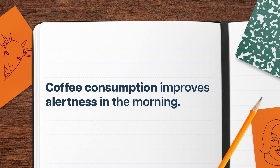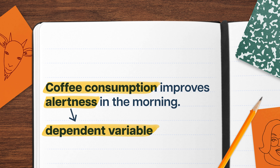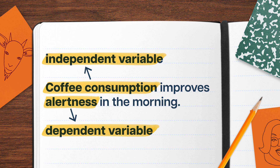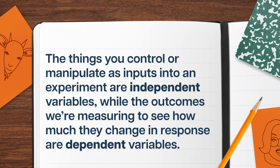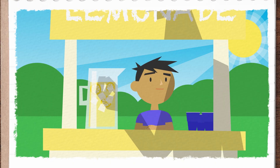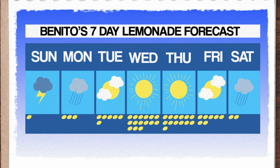This is all clear in cases where we run experiments. Benito, for example, is running a correlational experiment. Going back to our unfairly maligned morning coffee: if we wanted to investigate the statement 'coffee consumption improves alertness in the morning,' alertness is the dependent variable and coffee consumption is the independent variable. That's because we're interested in whether being alert depends on drinking coffee. To test that, you could control whether you drink coffee every morning, independent of other factors — the things you control as inputs are independent variables, while the outcomes you measure in response are dependent variables. But sometimes there's not a direct arrow from one to the other. When it's sunny outside, more people might walk to work instead of taking a car or bus. So in Lemonade Land, it could be that the increase in people walking past the stand is what's driving Benito's sales, not the temperature itself.